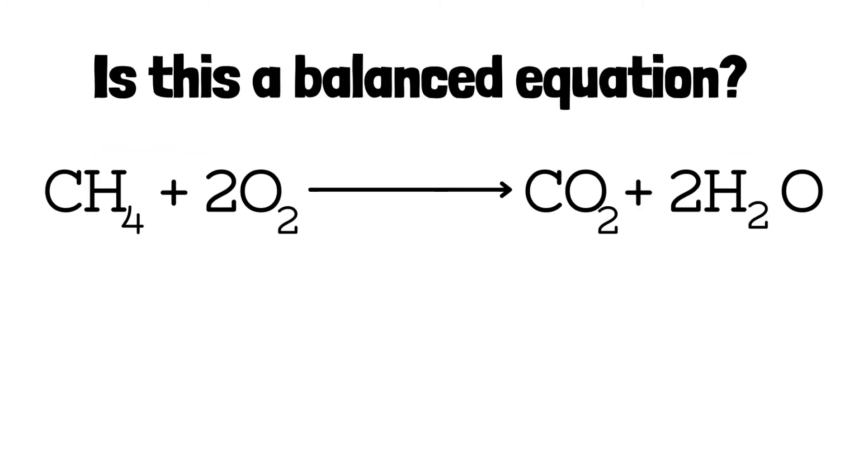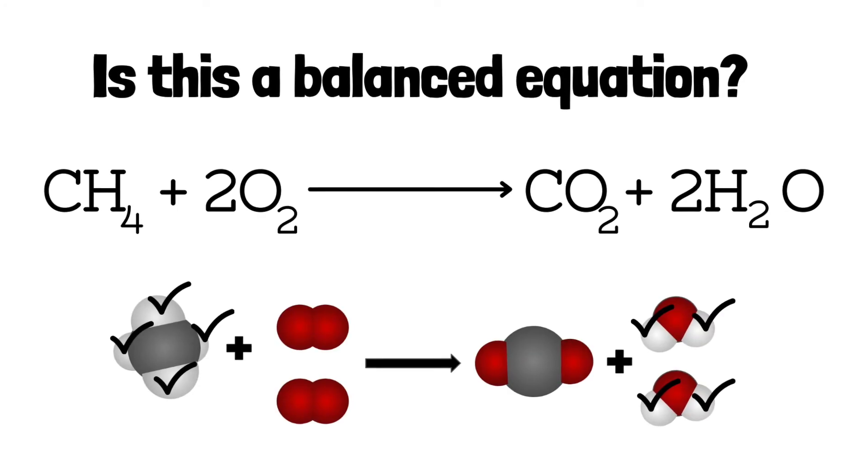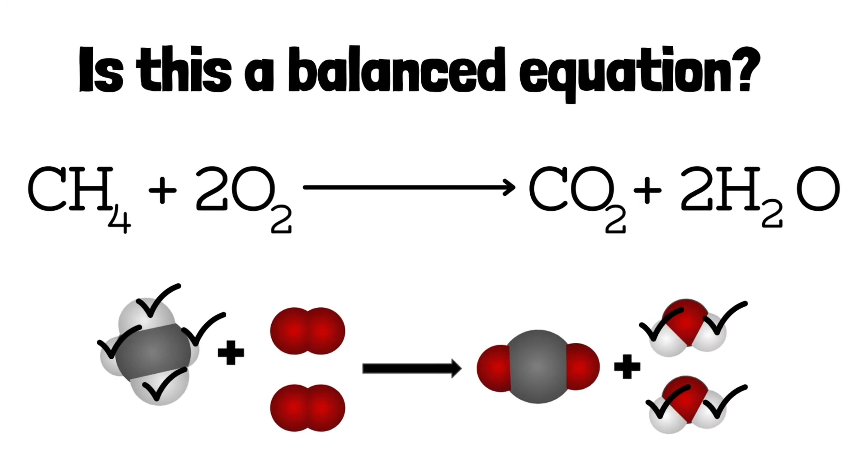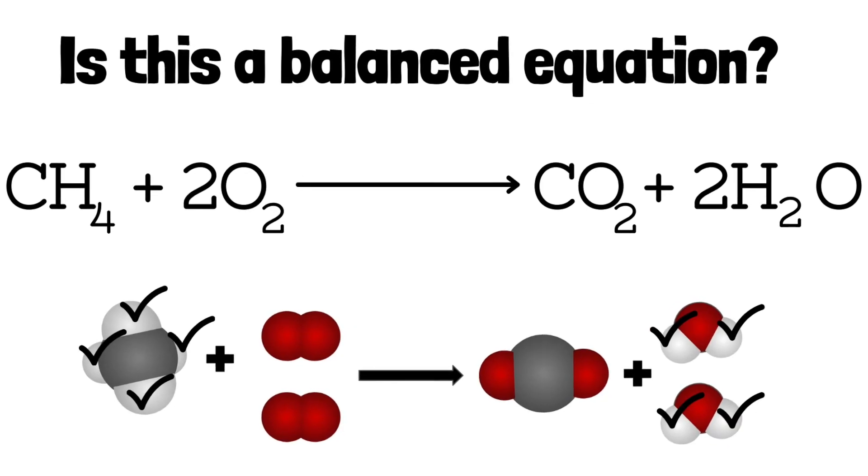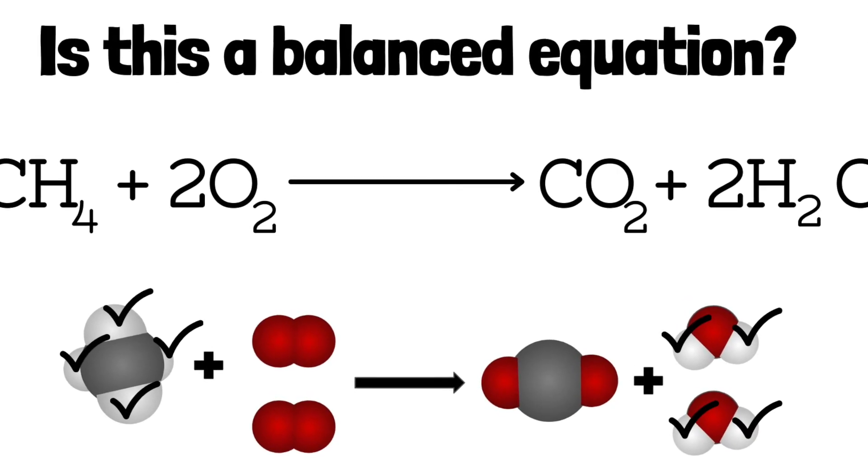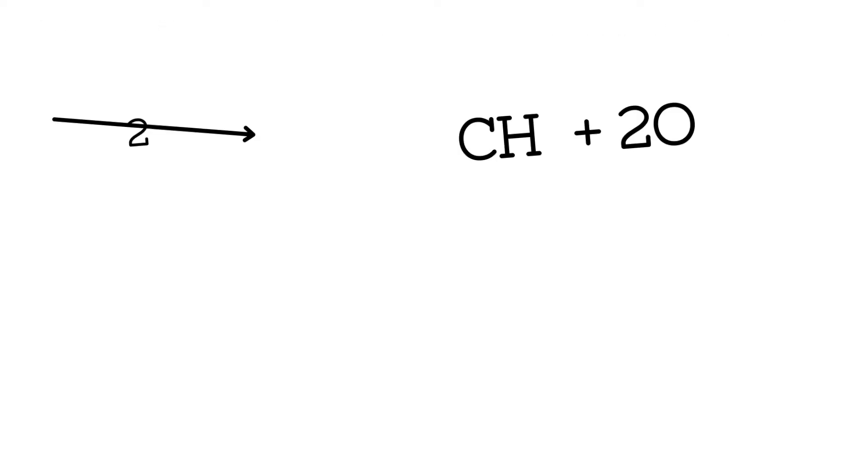So now that we know how to determine the number of atoms that are on the reactant and product side of an equation, we ask ourselves, is this a balanced equation? And sometimes we can determine that just by counting off the spheres that are in a model. But what happens when we don't have the spheres or a model representation? Well that's when we look at the equation and we count the atoms.